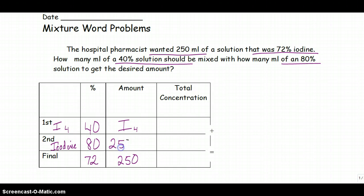So if I have I amount of the 40% solution, the 80% solution I have 250 minus the 40% solution. Now for my concentration, I'm just going to multiply: 40 times I gives me 40I sub 4, and again the subscript has no mathematical bearing, it's just to help me keep it straight. Distribute: 80 times 250 gives me 20,000, 80 times negative I, so minus 80I sub 4. 72 times 250 gives me 18,000.